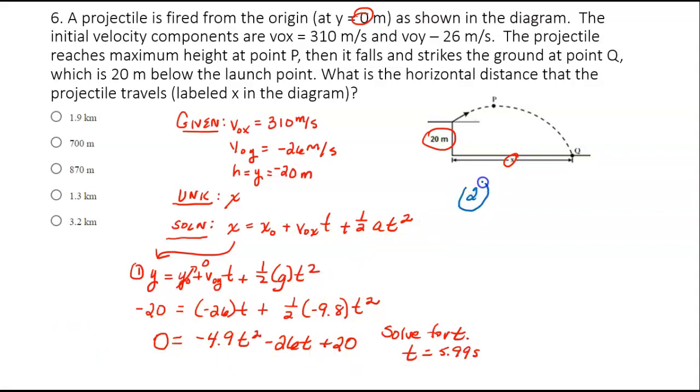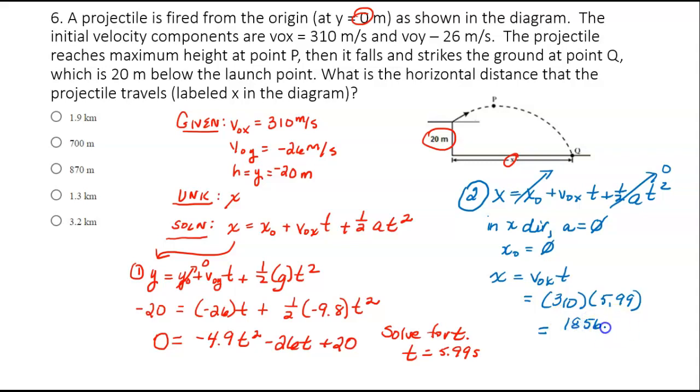Step two is using this formula. We have X equals X0 plus V0X T plus one half AT squared. In the X direction, acceleration is nothing when it comes to projectile motion. And our initial is zero. So X equals V0X times T. V0X is 310, our time is 5.99. When we multiply those, we get 1856.2 meters.